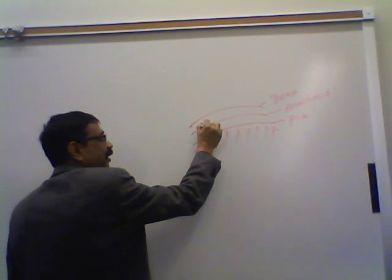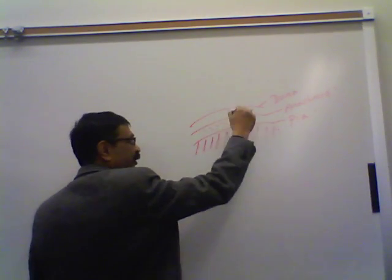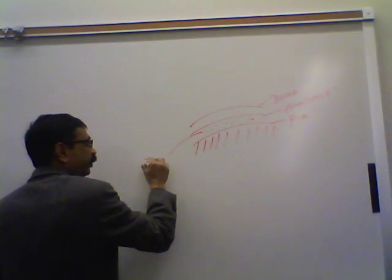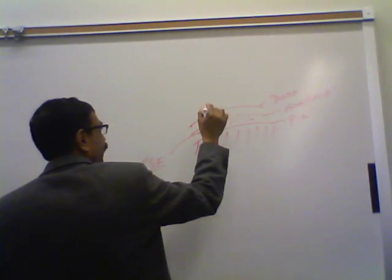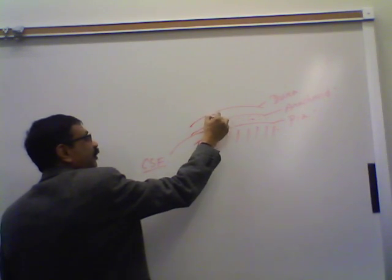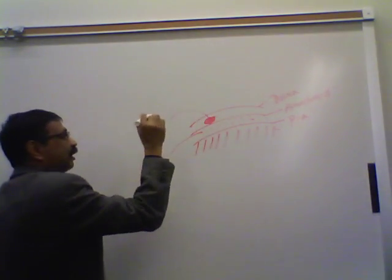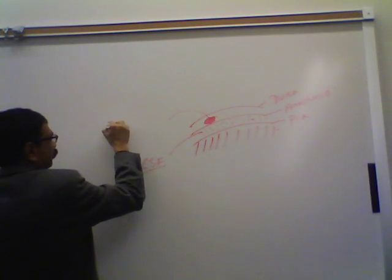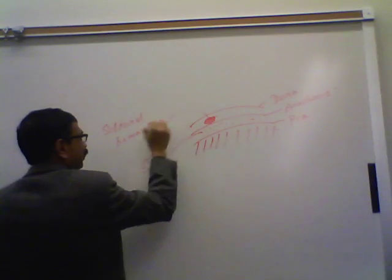The space under the arachnoid mater is called the subarachnoid space — 'sub' means under the arachnoid mater. The cerebrospinal fluid, or CSF, is located in the subarachnoid space. The space under the dura mater is called the subdural space, and sometimes a hematoma occurs — blood accumulates in this space. So we say subdural hematoma.